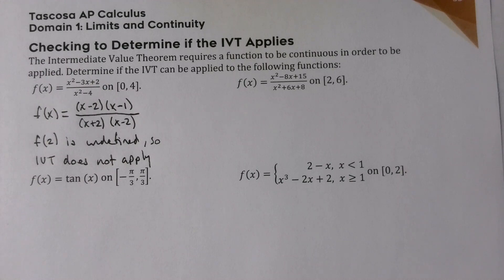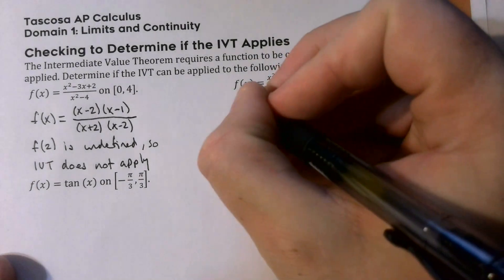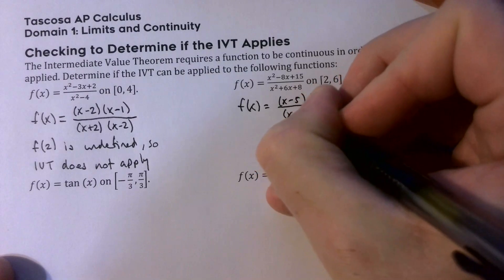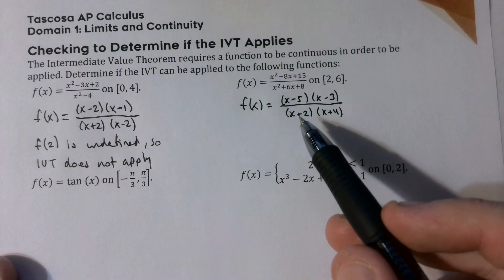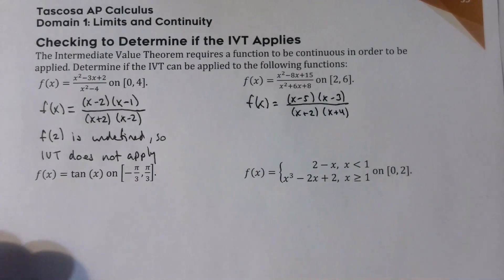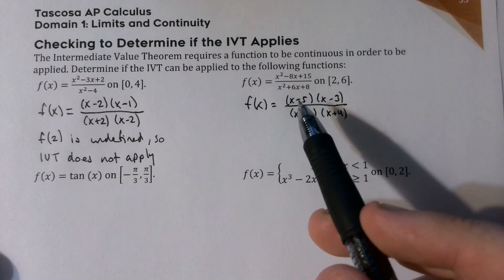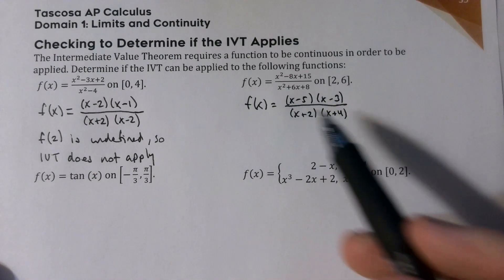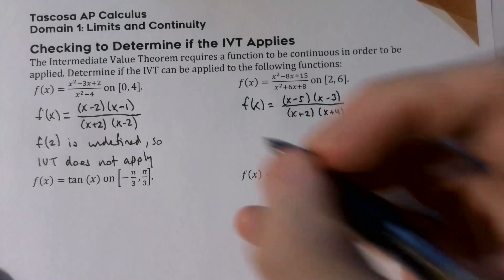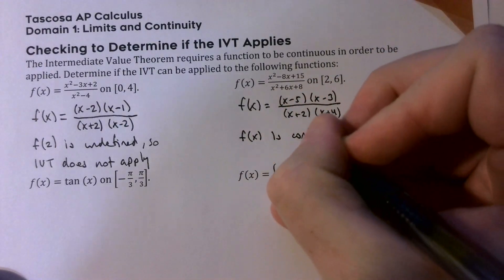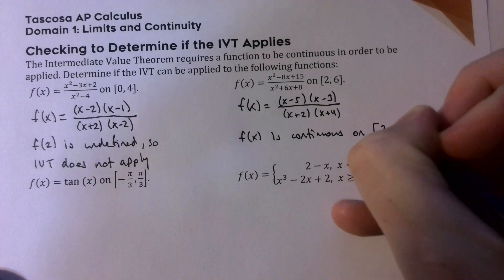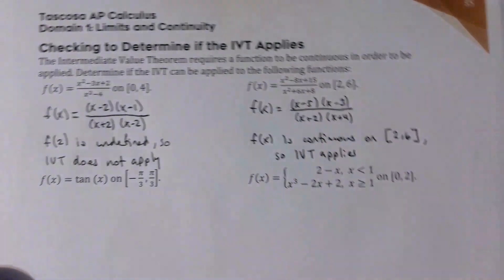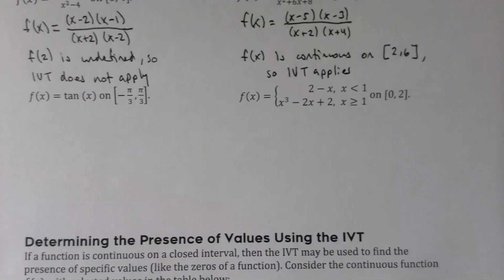Let's look at the next function on the interval [2, 6]. Factoring gives numerator (x − 5)(x − 3) and denominator (x + 2)(x + 4). This function is undefined at x = −2 and x = −4, but neither of those values are on the interval [2, 6]. The zeros of the numerator at x = 5 and x = 3 just mean the function equals 0 there — it's not undefined. So this function is continuous on the closed interval [2, 6], and the IVT applies.